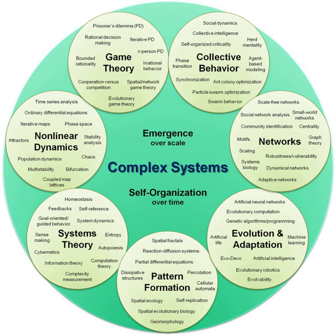Complex adaptive systems are special cases of complex systems that are adaptive in that they have the capacity to change and learn from experience. Examples of complex adaptive systems include the stock market, social insect and ant colonies, the biosphere and the ecosystem, the brain and the immune system, the cell and the developing embryo, cities, manufacturing businesses, and any human social group-based endeavor in a cultural and social system such as political parties or communities.